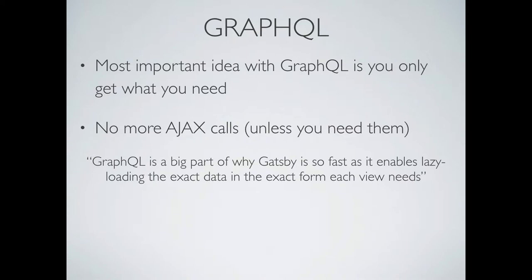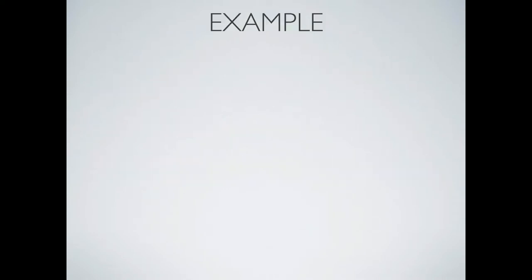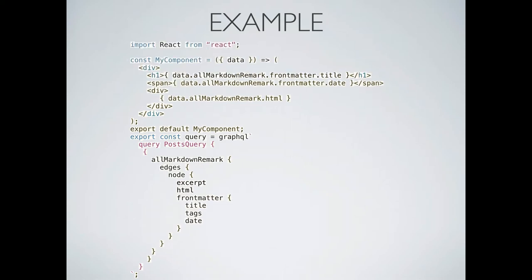Here's how you actually use a plugin. We NPM-installed that Markdown plugin, and now that plugin has taken our Markdown blog post files and made them part of the GraphQL schema — it doesn't care they're Markdown anymore. We've titled them AllMarkdownRemark. Then we can grab what we want from it: the body, title, tags, date, whatever — all in one .js or .jsx file that is your React component.